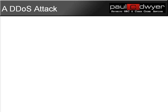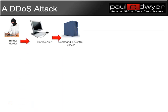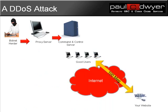Let's look at a typical sort of DDoS attack scenario. First of all, you'll have a botnet herder. The botnet herder will have a command and control server. This command and control server is generally communicated from the botnet herder via a number of proxy servers in order to disguise the identity of the botnet herder. You may have your website on the internet with a good solid connection through to all your users and everything is fine.